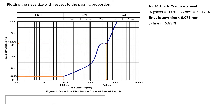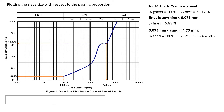Now that we have the percent gravel and percent fines, we can determine the percent sand by taking the difference from 100. Sand is anything in between gravel and fines — between 4.75 millimeters and 0.075 millimeters. So that would be 100% minus 36.12% minus 5.88%, which gives us 58%.